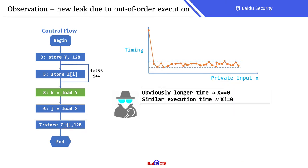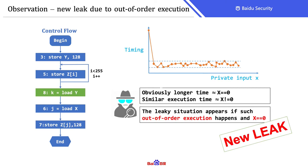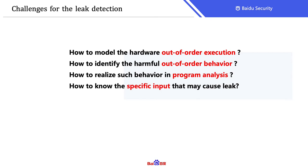Again, we can record the timing and draw a new figure. We conclude that if execution consumes obviously longer time, then X should be 0. Because this unique situation only appears if out-of-order execution happens and the input X is 0, there is a new leak because of out-of-order execution of the memory load at line 8. From this example, we can think about how to detect such leaks. There are four challenges we need to address: how to model hardware out-of-order execution in software, how to identify specific out-of-order cases, how to realize such behavior in program analysis, and how to obtain the right input that may cause leaks.